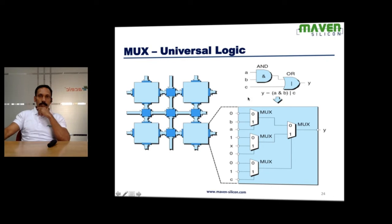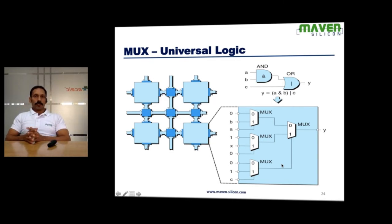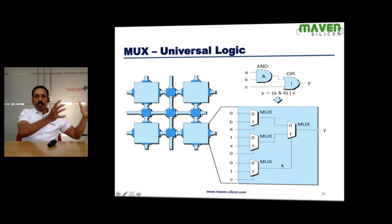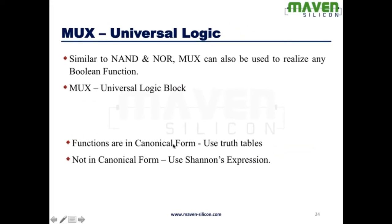You can realize any kind of combinational logic through a multiplexer. Look at this example: the logic function Y equals A AND B OR C. This is how you connect all the inputs and outputs to realize the same logic function. In FPGA, you will have a lot of multiplexers, and any time you realize a logic function, you need to know how to map it onto the existing multiplexers. If the functions are in canonical form, you can straight away use the truth table. If the function is not in canonical form, then you have to use Shannon's expansion. Remember this.